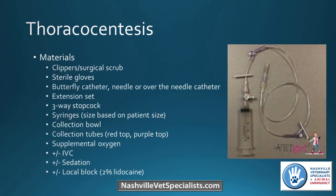The materials you need are listed here, and we've got a picture of one of our setups. You need your sterile supplies, and the type of catheter depends on doctor preference and patient size. Definitely want an extension set, a three-way stopcock, and syringes — size varies based on your patient. Collection bowl and tubes. An IV catheter is nice. Sometimes you need sedation, sometimes you don't. You could also do a local block, and supplemental oxygen is recommended since these patients are usually symptomatic.